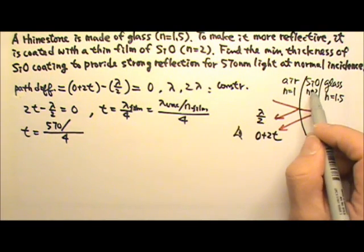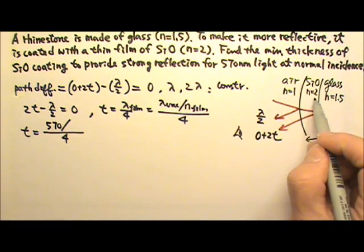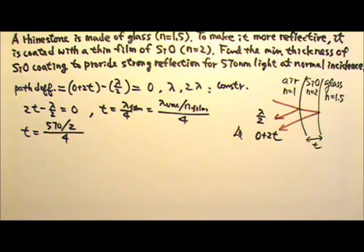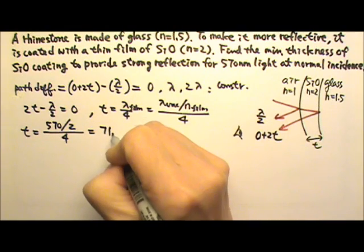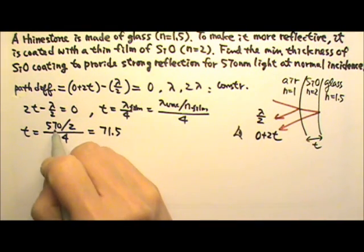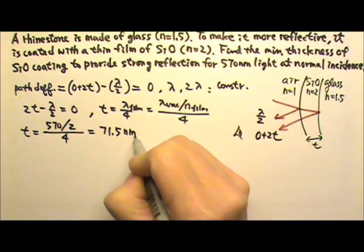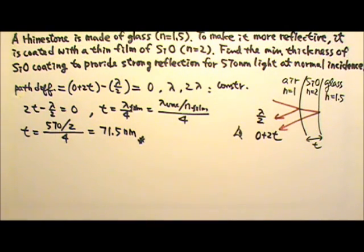The thin film is silicon monoxide, so n is 2. So this gives us 71.5 and that's nanometers, so this is also nanometers, so this is the thickness we need.